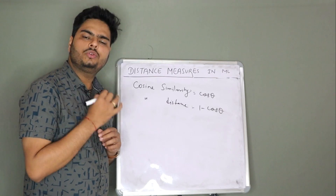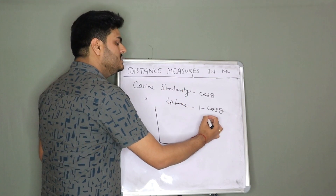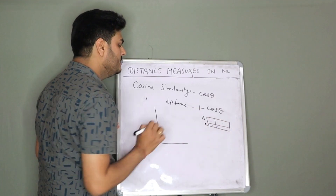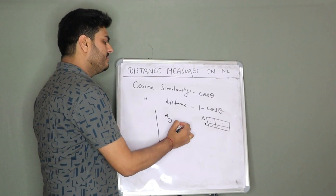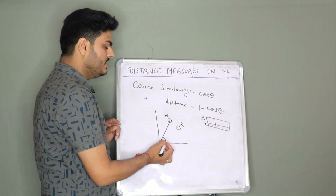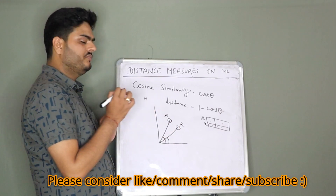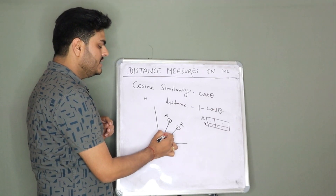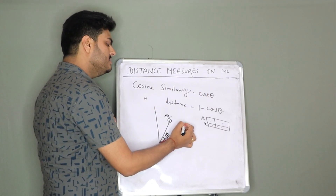Now what is this theta? Let us try to understand with an example. Let us say this is my XY plane and we take the same data — this is Aman's row and this is Kumar's row. For simplicity, Aman lies here and Kumar lies here. If you join Aman's point with the origin, it makes some angle with the origin. And if you join Kumar's point with the origin, that vector also makes some angle with the origin. The difference of these two angles is the theta that we plug into the formula. This becomes the Aman vector and this becomes the Kumar vector.